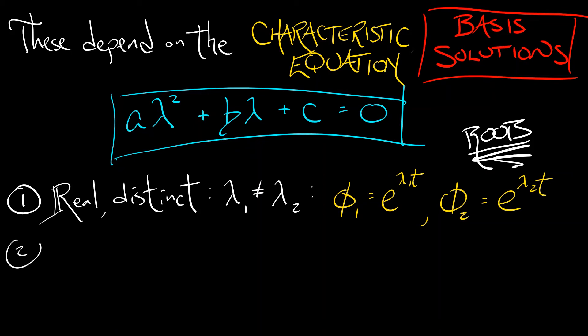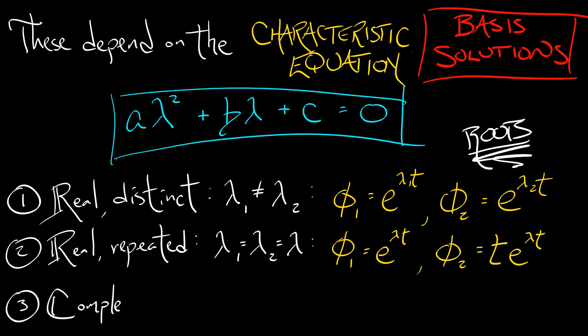The second case is if you have real repeated roots, lambda and lambda. In this case, the basis solutions are e to the lambda t and t times e to the lambda t. And in the third case, where you have complex conjugate roots alpha plus or minus i times beta, then your basis solutions are e to the alpha t cosine beta t and e to the alpha t sine beta t.